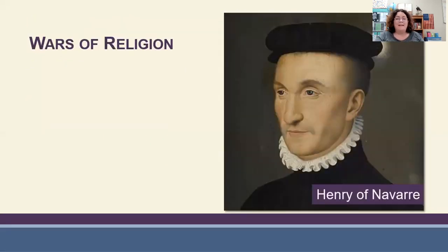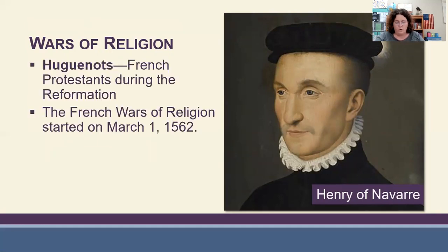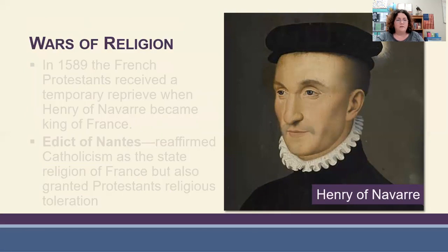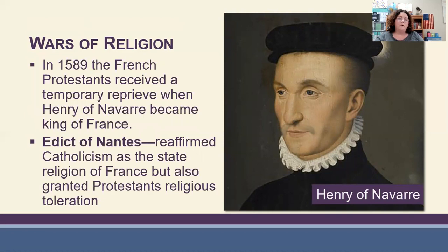The conflict led to wars of religion. Even though rulers of France vigorously supported the Church of Rome, a number of Protestants — known as Huguenots, or French Protestants — continued to increase. These French Protestants endured fierce persecution. In 1572, 20,000 Huguenots in Paris were massacred in their homes during a carefully planned attack. Seventeen years of fighting between Catholic and Protestant forces followed. In 1589 the French Protestants received a reprieve when Henry of Navarre became king of France and issued the Edict of Nantes, which reaffirmed Catholicism as the state religion but also granted Protestants religious toleration.